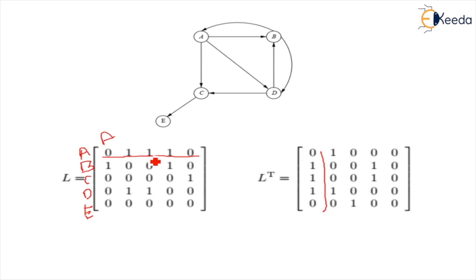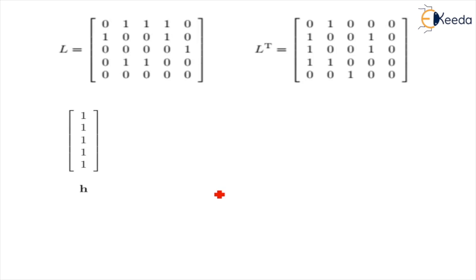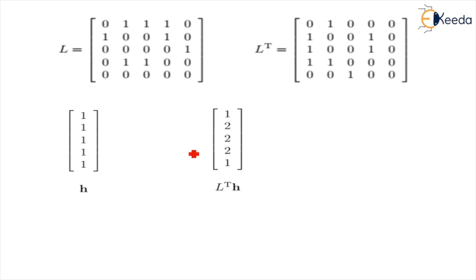For example, a row like 0, 1, 1, 1, 0 in L becomes the column 0, 1, 1, 1, 0 in L-transpose. We convert the full L matrix to L-transpose. The formulas we will use are: H = λ · L-transpose · H, and A = λ · L · L-transpose · A. We initialize hub vector H with all ones, since we have 5 nodes. Then we calculate L-transpose multiplied by H.